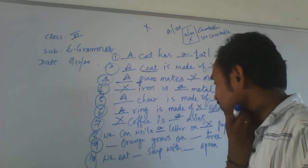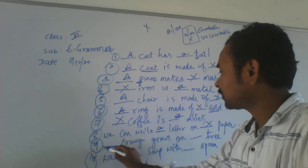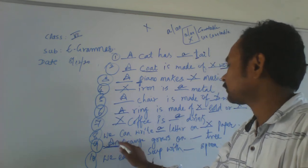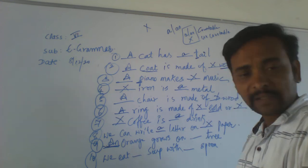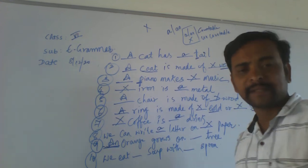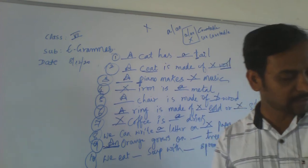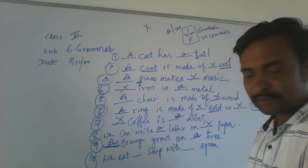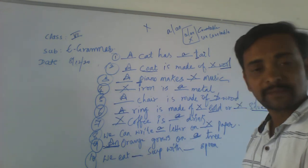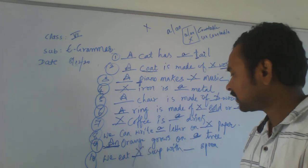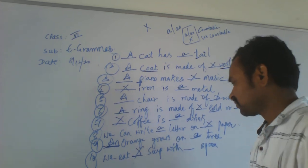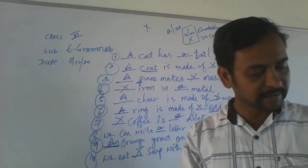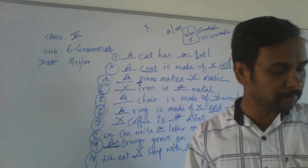Ninth example: orange grows on a tree. Can you count orange? Yes — it's countable. O is a vowel, so we use AN. An orange grows on a tree. Tree is countable too, so a tree. Tenth example: we eat soup with a spoon. Soup — can you count it? No, so put a cross mark. But spoon is countable, so we use a spoon. We eat soup with a spoon. That's how it works. There are four more examples remaining.